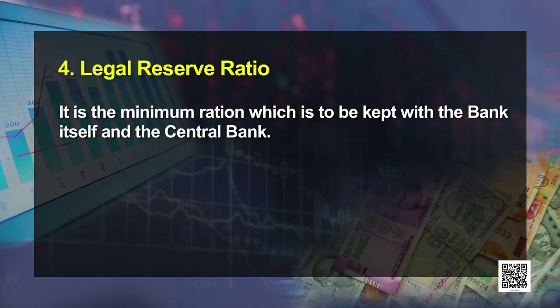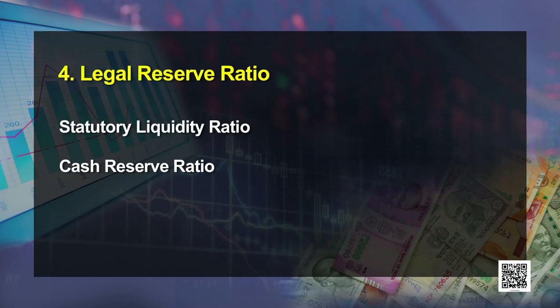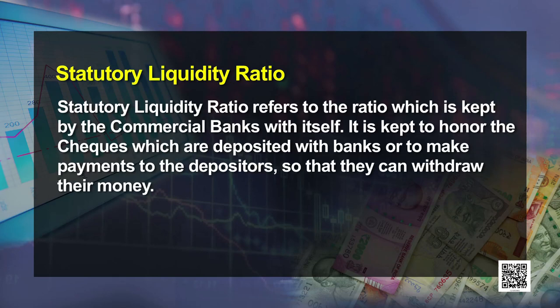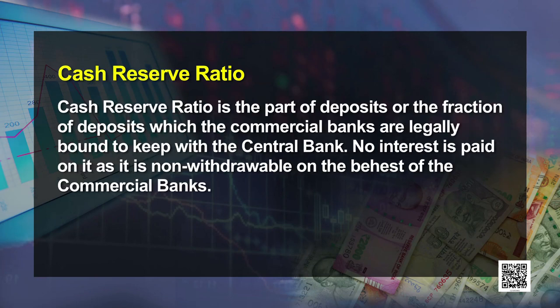The next quantitative tool is legal reserve ratio. Legal reserve ratio is the minimum ratio which is to be kept with the bank itself and the central bank. This legal reserve ratio is divided into two parts: statutory liquidity ratio (SLR) and cash reserve ratio (CRR). SLR refers to the ratio of deposits kept by the commercial bank with itself, to honor checks and make payments to depositors when they withdraw. CRR is the fraction of deposits which the commercial bank is legally bound to keep with the central bank.